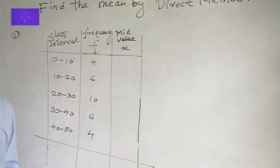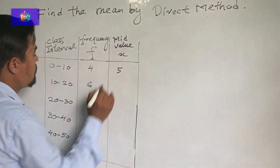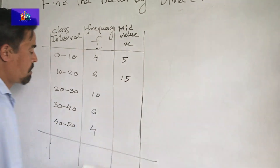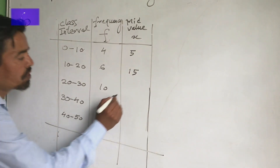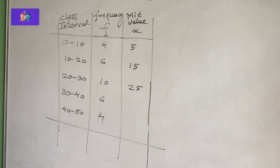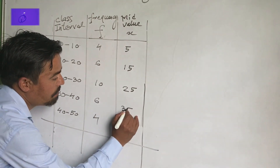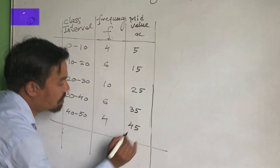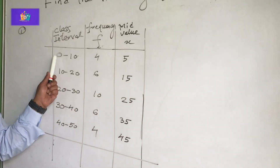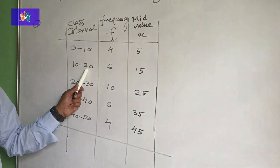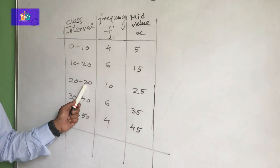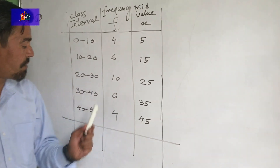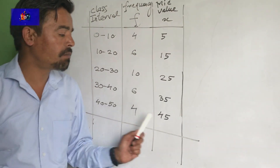Computing mid values: 0 plus 10 divided by 2 equals 5. 10 plus 20, 30 divided by 2 equals 15. 20 plus 30, 50 divided by 2 equals 25. 30 plus 40, 70 divided by 2 equals 35. 40 plus 50, 90 divided by 2 equals 45. So the mid values X are 5, 15, 25, 35, 45.